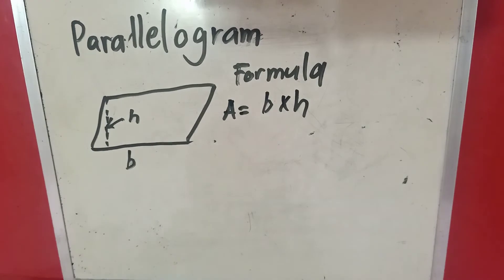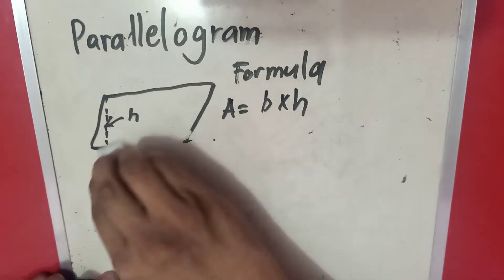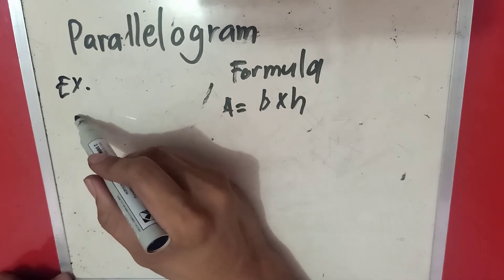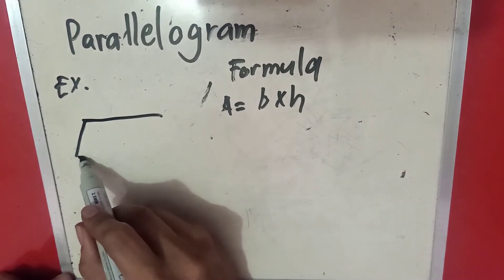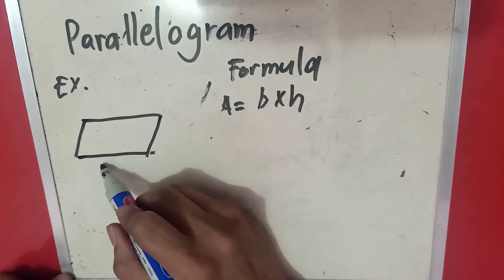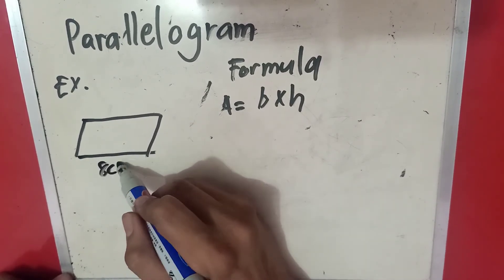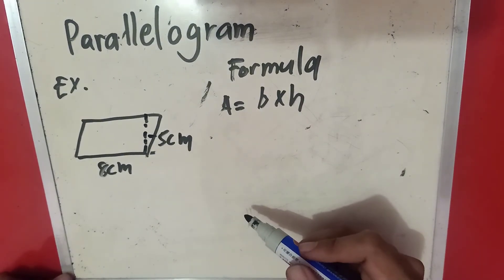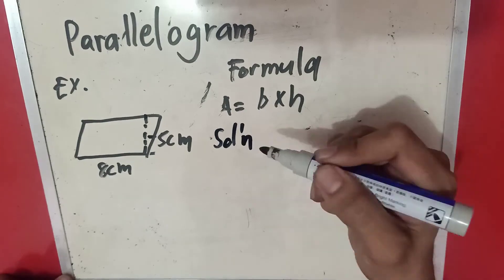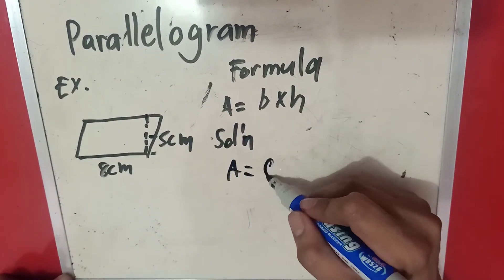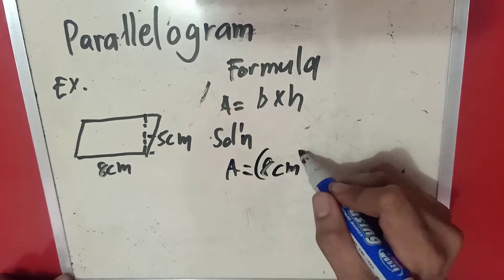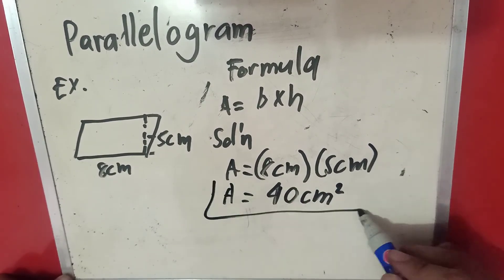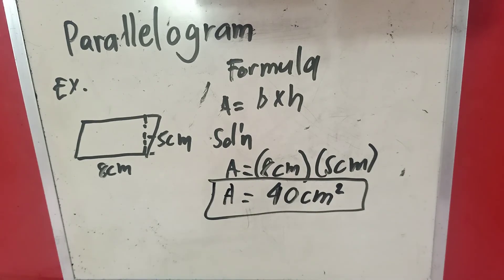Let's have an example. We have a parallelogram with a base of 8 cm and a height of 5 cm. Substituting the given values into the formula: area equals 8 cm times 5 cm. 8 times 5 is 40, so the area is 40 cm squared.